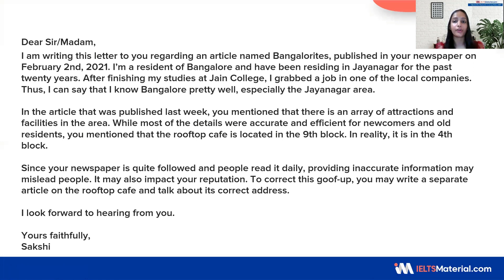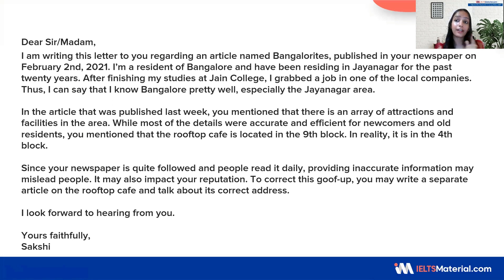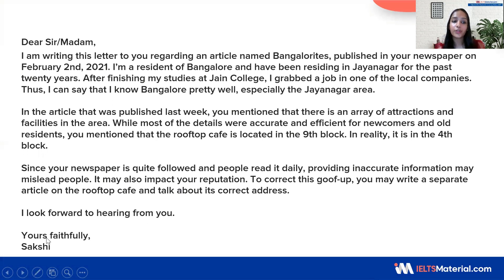Now let's talk about the second bullet point. In the article that was published last week, you mentioned that there is an array of attractions and facilities in the area. While most of the details were accurate and efficient for newcomers and old residents, you mentioned that the rooftop cafe is located in the ninth block. In reality, it is in the fourth block. Now let's cover the last bullet point: Since your newspaper is quite followed and people read it daily, providing inaccurate information may mislead people. It may also impact your reputation. To correct this goof up, you may write a separate article on the rooftop cafe and talk about its correct address. I look forward to hearing from you. Yours faithfully, Sakshi.